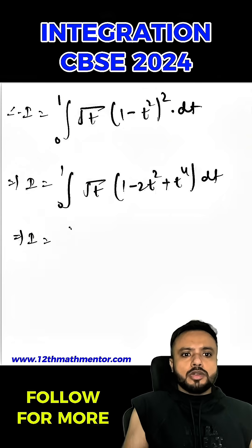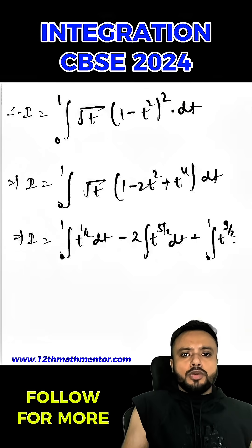So i equal to 0 to 1 t raised to the power 1 by 2 dt minus 2 into t raised to the power 5 by 2 dt plus 0 to 1 t raised to the power 9 by 2 dt.